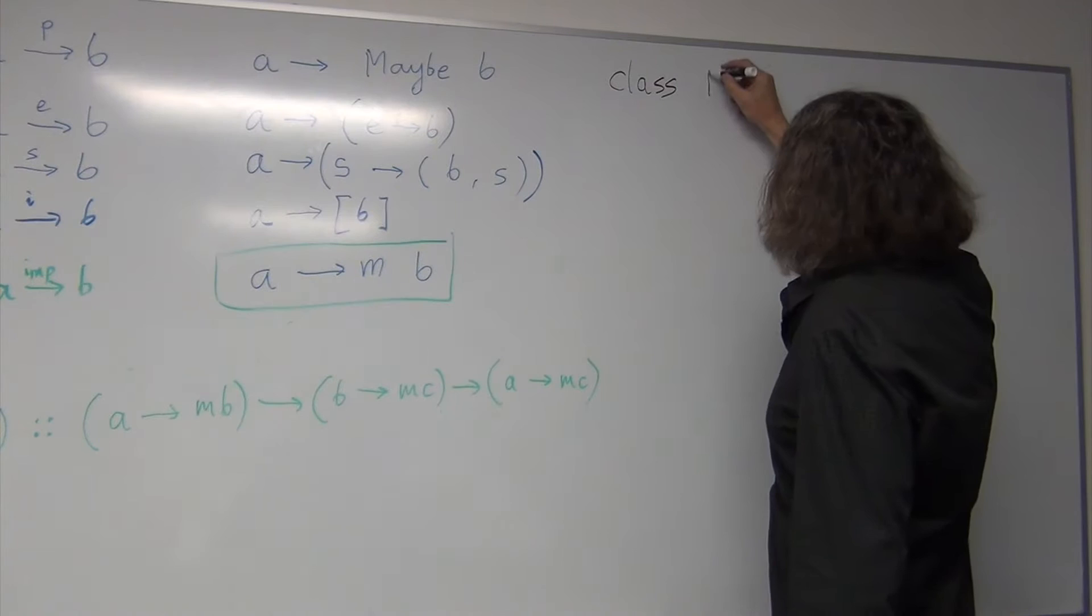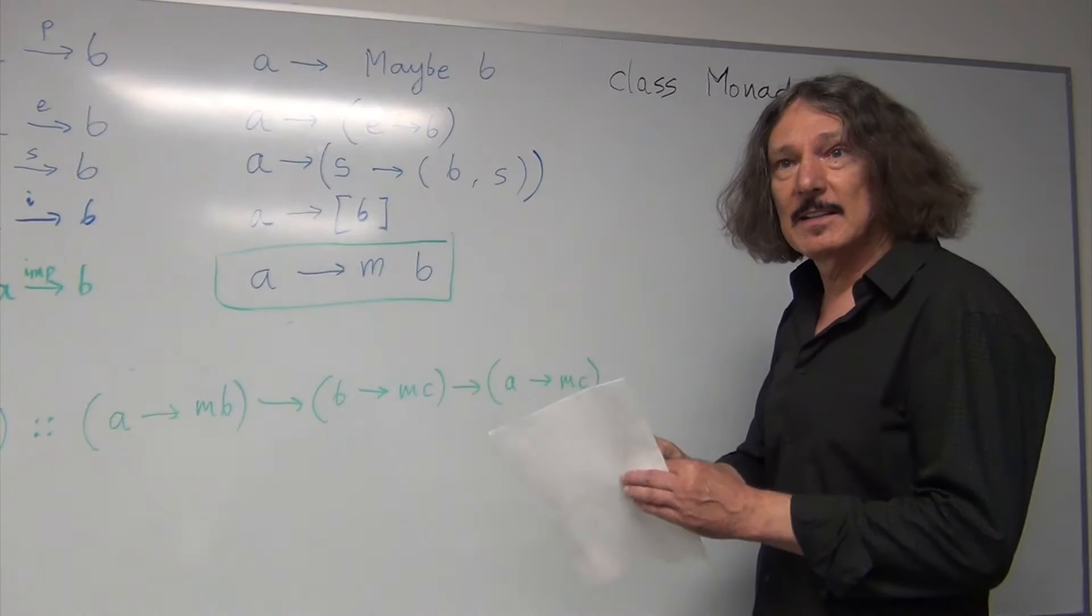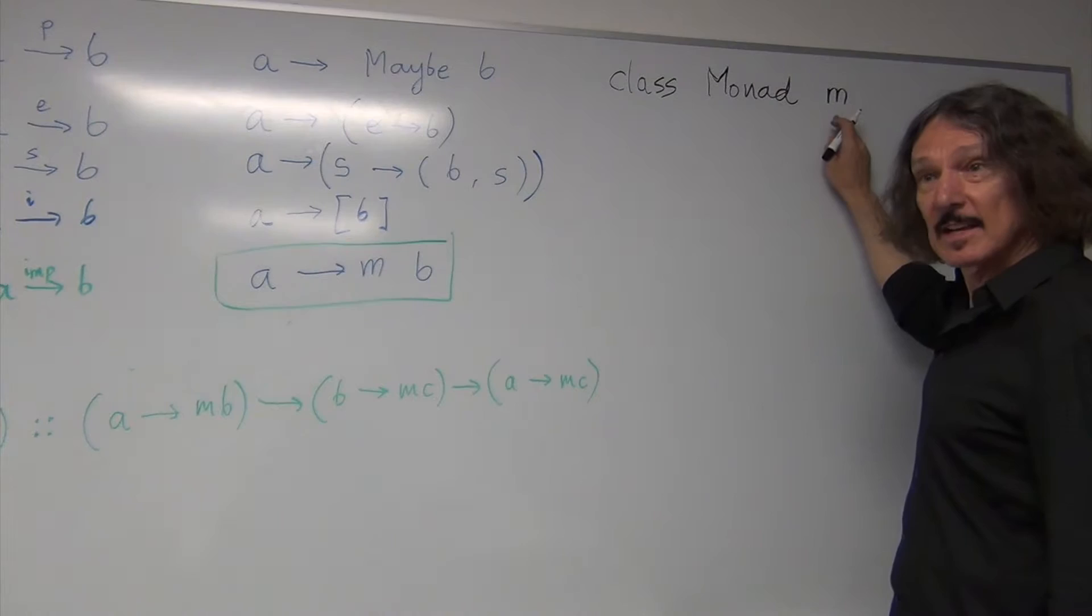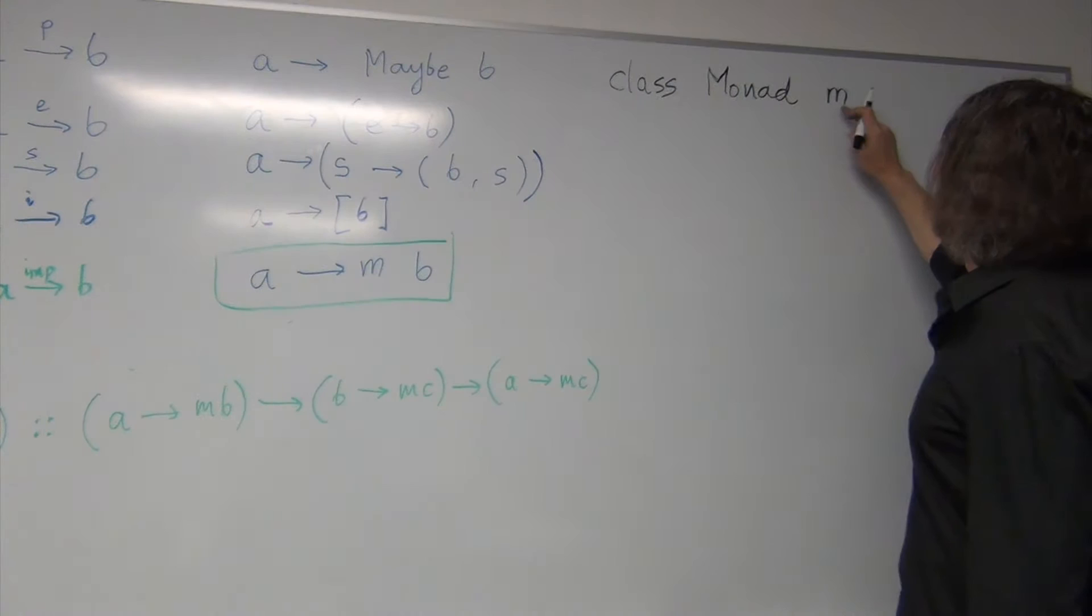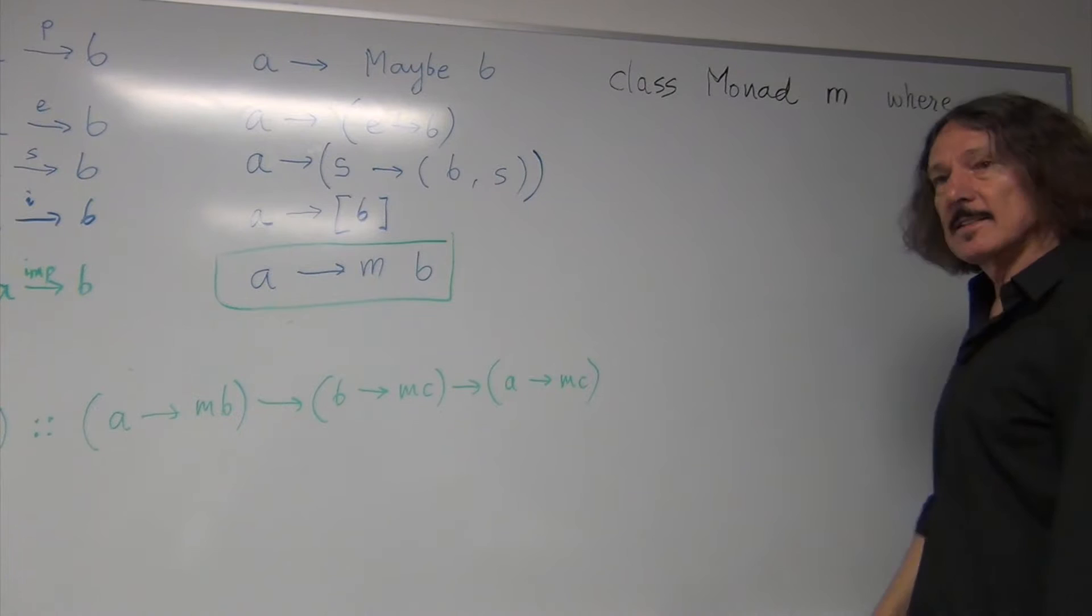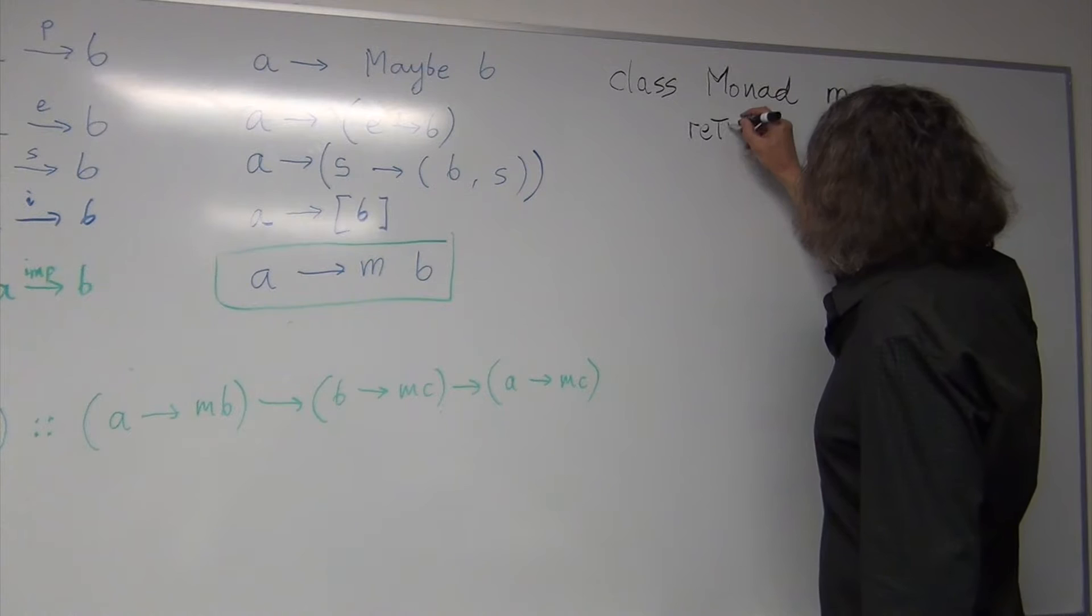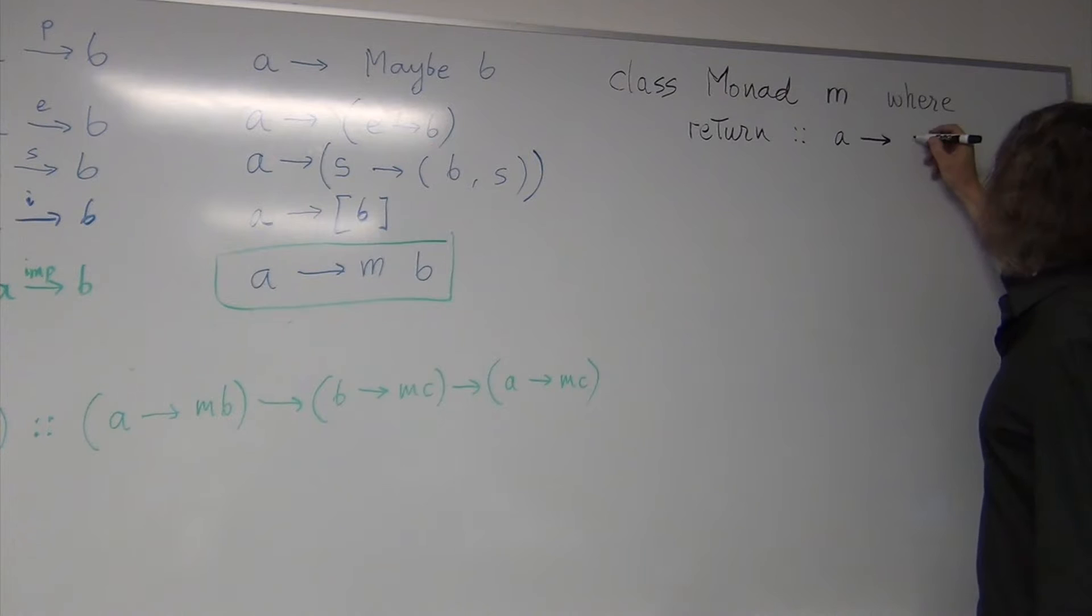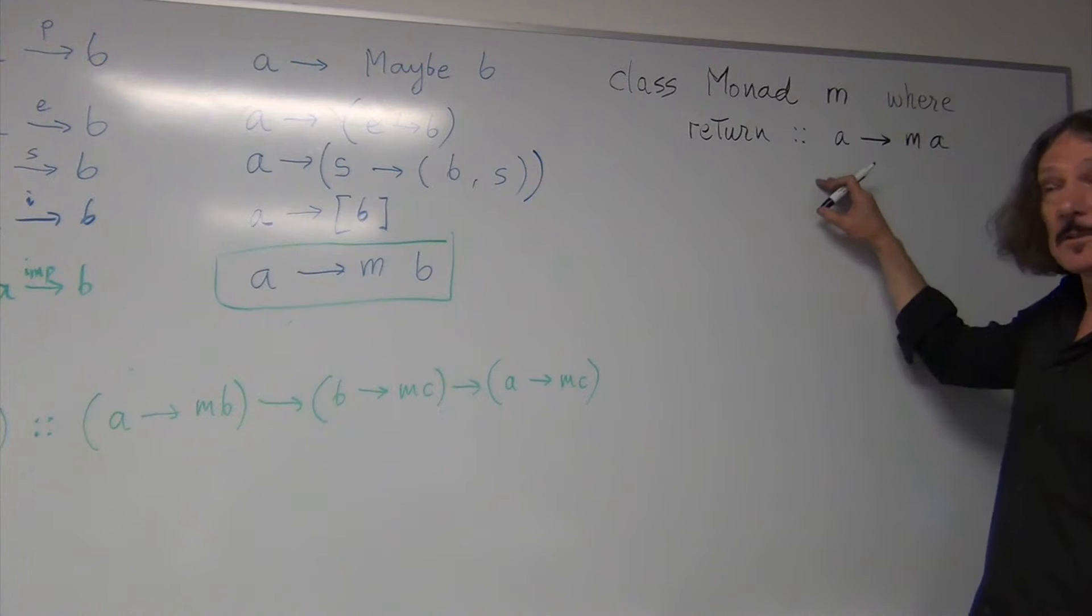So, there's a class of types called Monad. And this is not your usual definition from Prelude, but I'll write it as if it were, and then I'll explain why it's not. So, class Monad M. So, that's our type variable that's actually of the kind star arrow star. That's a type constructor.